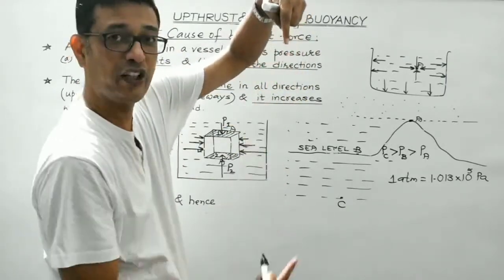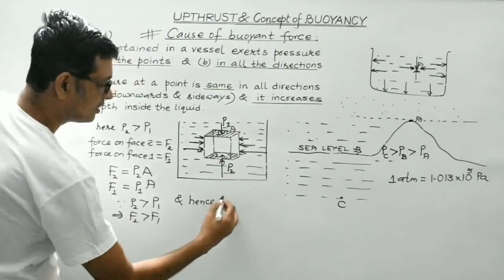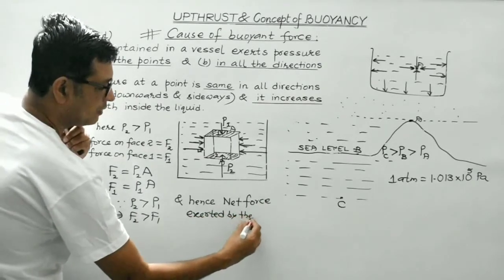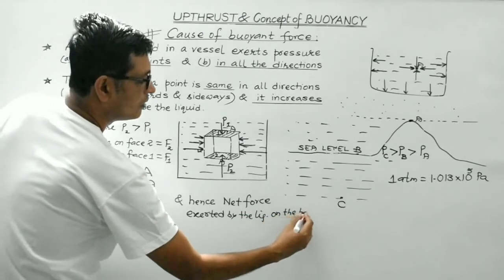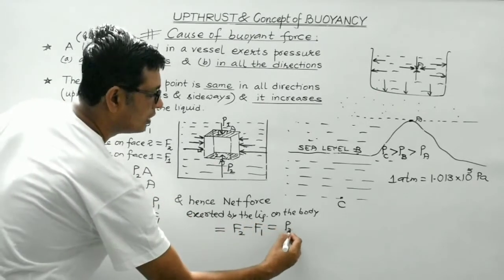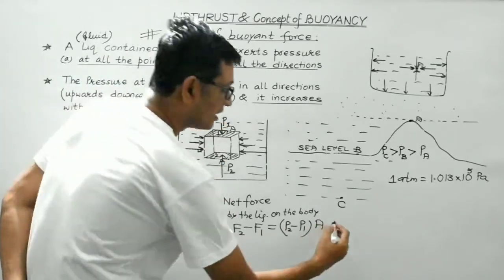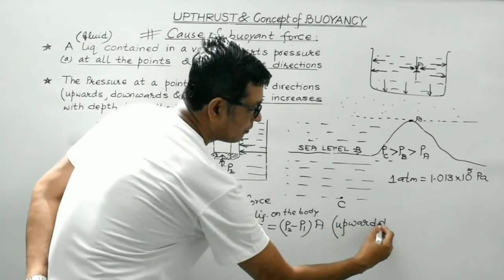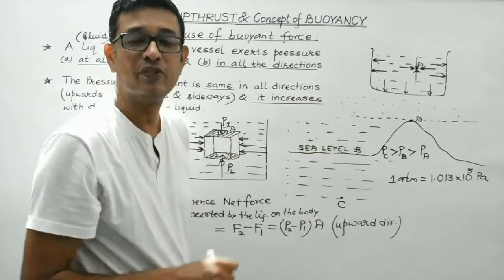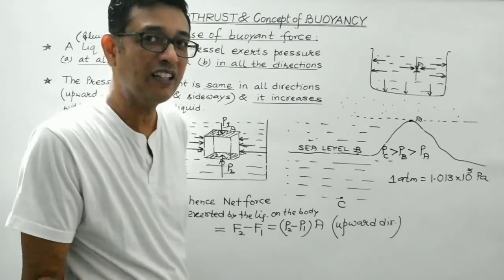For example, if F1 is 1 Newton acting downward and F2 is 3 Newton acting upward, the net force is 3 − 1 = 2 Newton in the upward direction. So the net force exerted by the liquid on the body when immersed equals F2 − F1 = (P2 − P1) × A, directed upward. This net upward force is known as up thrust or buoyant force, and this property of the liquid is known as buoyancy.